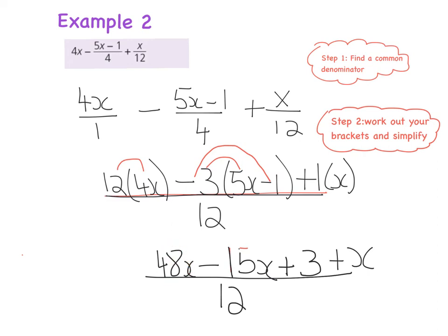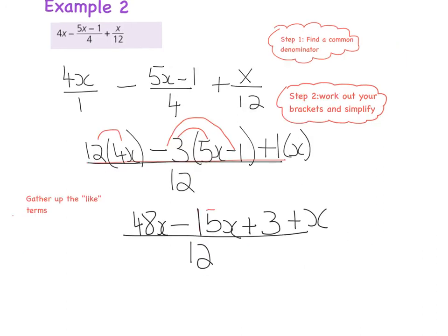Okay. At this point here, then I have 48x minus 15x plus 3 plus x. And hopefully, everybody's seeing here that we can tidy this up or gather up the like terms. Okay. So I am going to collect my x's first of all. So I've got 48x minus 15x plus x. So 48x minus 15x is 33x plus another x is 34x. So I will have 34x. And then if I collect my numbers, I actually only have 3. That's my only number. So it'll be 34x plus 3 all over 12. And I can't break that down any further. So I have simplified this whole expression here, 4x minus 5x minus 1 divided by 4 plus x divided by 12, all to be 34x plus 3 all over 12.